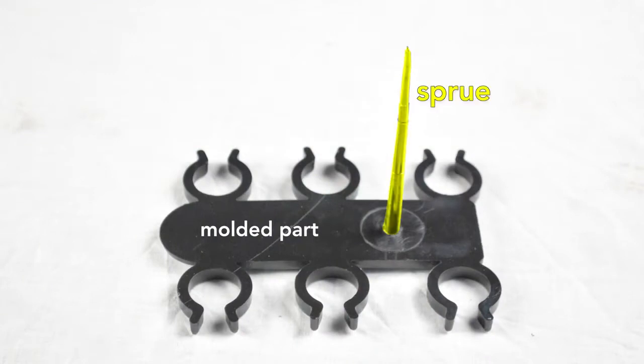When the part drops from the mold, an operator has to remove the sprue, that section of plastic that connected the injection unit to the mold. Sprues are manually twisted or cut off the part. Sprues are attached to objects only in molds that make a single part at a time, like a chair.